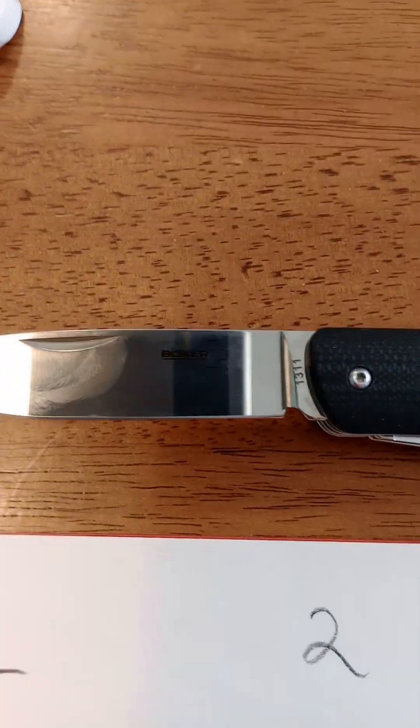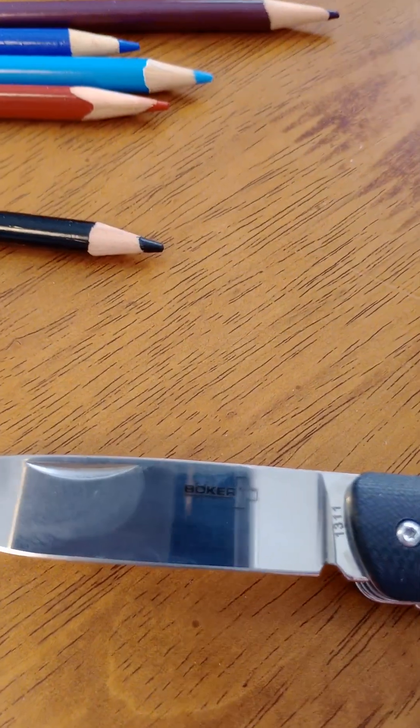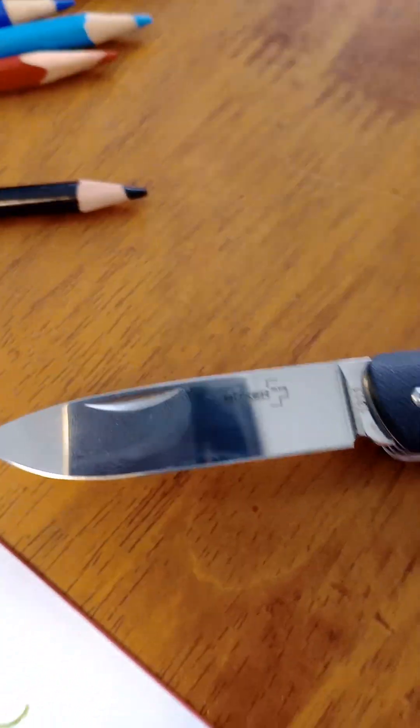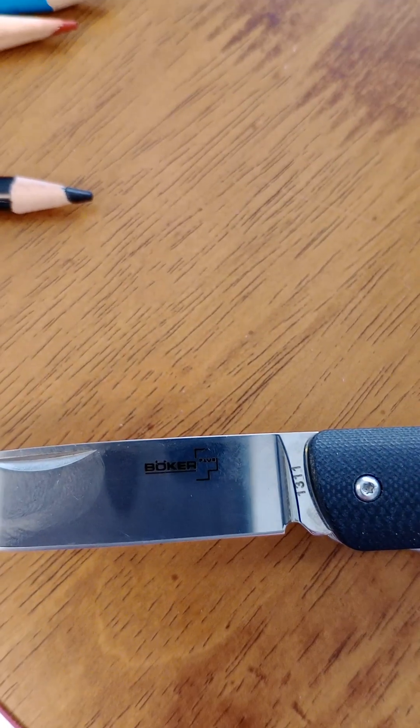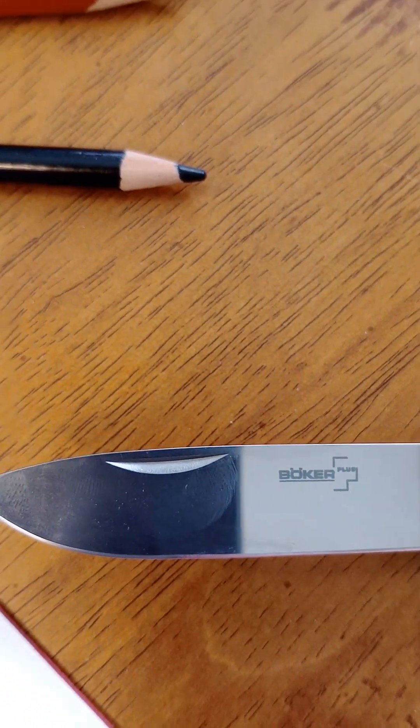Let's apply it to this knife here. This knife is a Boker knife. Let me get it away from that light so I can see it better. The knife is very shiny, so it's hard to see the word Boker. There you go, Boker. It's a Boker plus.